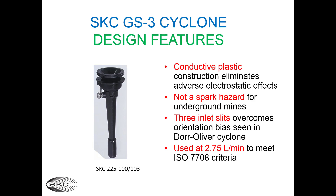The aluminum cyclone is not an option for underground coal mines because alloys such as aluminum are considered a spark hazard if rubbed against rusty steel pipes. So the GS3 cyclone was developed and brought to SKC by West Virginia University for coal mining applications and others. The conductive plastic construction eliminates static electricity concerns and is not a spark hazard. The three inlets overcome orientation bias reported in the Dor Oliver. This cyclone is used at a higher flow rate of 2.75 liters per minute to enhance detection, and it is also inserted into the middle ring of a three-piece cassette for a larger collection area.